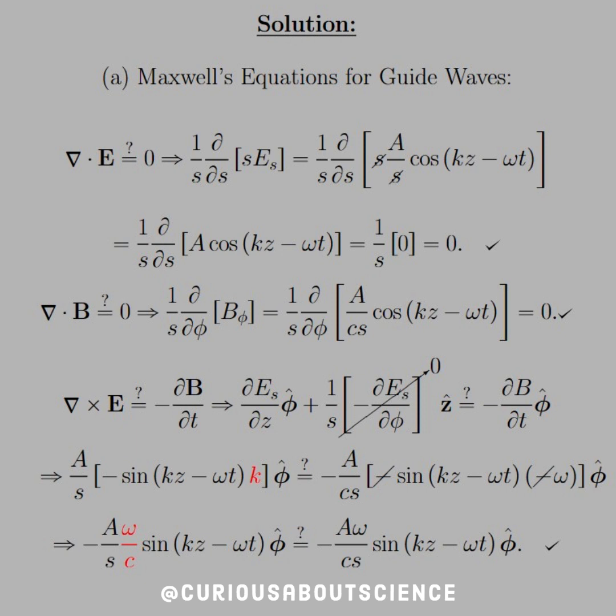Now, does the curl of E equal the negative time derivative of B? Okay, well, does the curl, if we write out the curl in cylindrical for ES component only, is that equal to negative B, D, T of, in the phi hat direction?